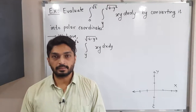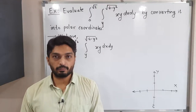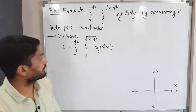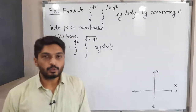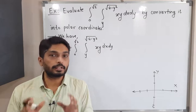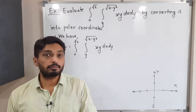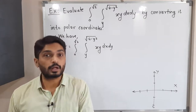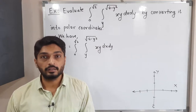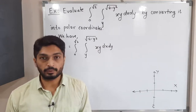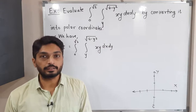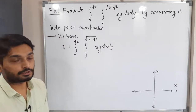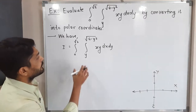Let us discuss this example. We have to solve this double integration using polar coordinates. First, we will find the region of integration. After that, we will convert it to polar form by putting x = r cos θ, y = r sin θ, and then solve the double integration in r and θ.